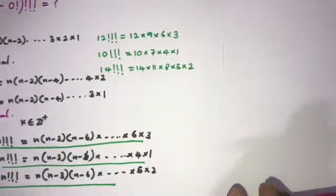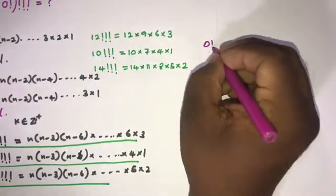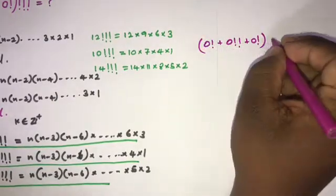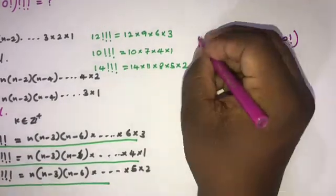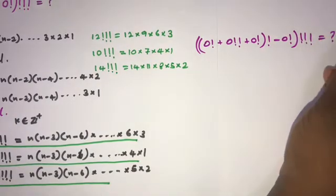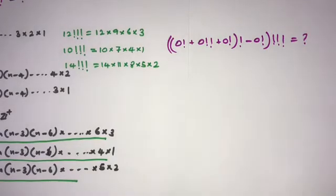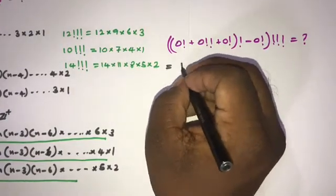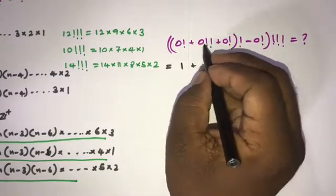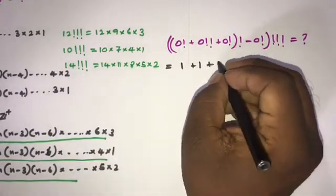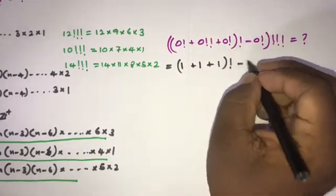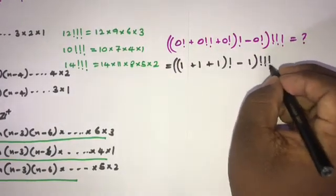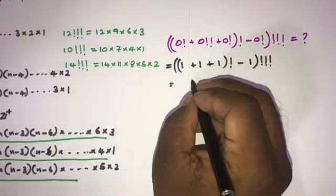Now we solve the main question: 0! plus 0!! plus (0!)! minus (0!)!!!. We know 0! = 1, 0!! = 1, so we get 1 plus 1 plus (1)! minus (1)!!!. That gives 1 plus 1 plus 1! minus 1!!!, which is 1 plus 1 plus 1 plus 1 equals... wait — it is 3 factorial minus 1 triple factorial.